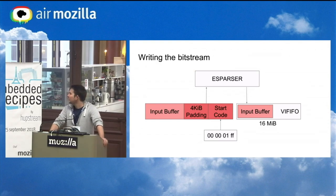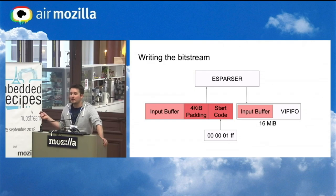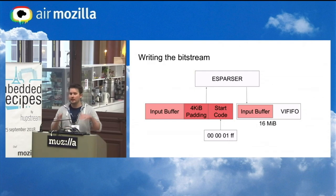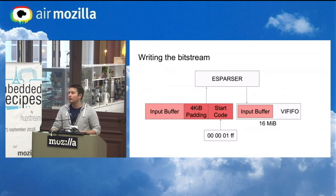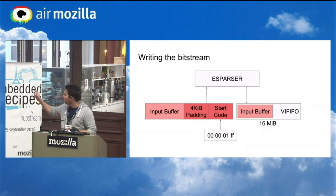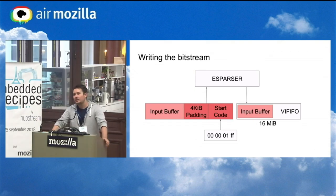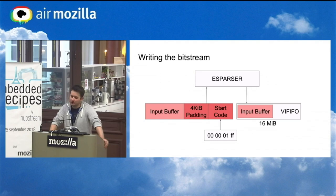It turns out you need to do some small hacks to the input buffer to get the IRQ. The first hack is to write a fake start code at the end of the input buffer. In a bitstream, you usually always have a start code followed by a packet of any kind, and the parser will refuse to give you an IRQ until you give it another start code at the end of the buffer. You also need to pad it to at least four kibibytes, otherwise it doesn't work either.